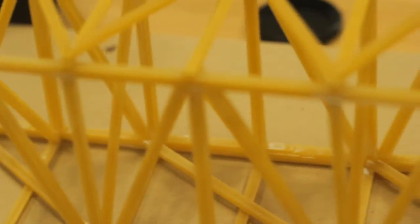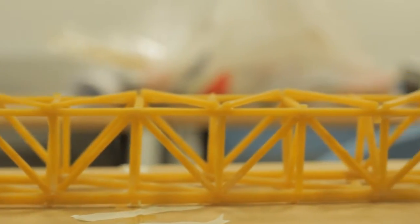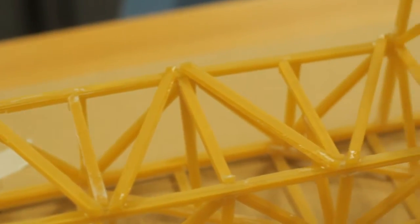To start off, this is our truss bridge. It is made out of layers and layers of fettuccine. An average of 4 layers to be exact.